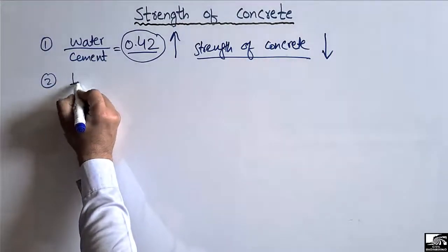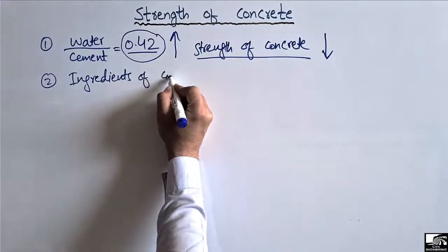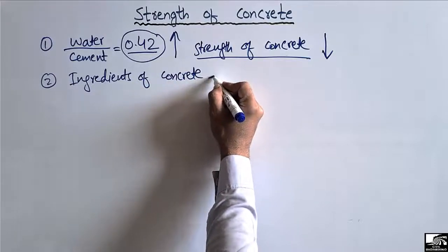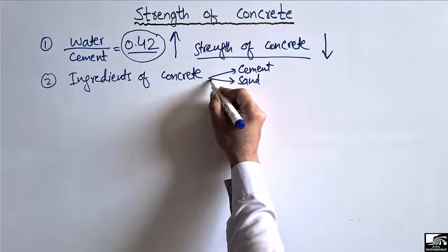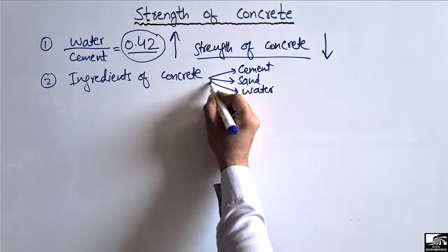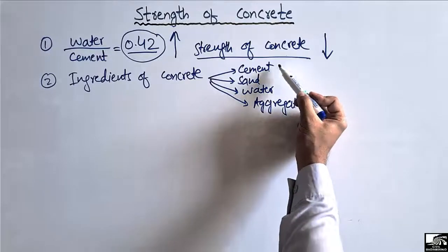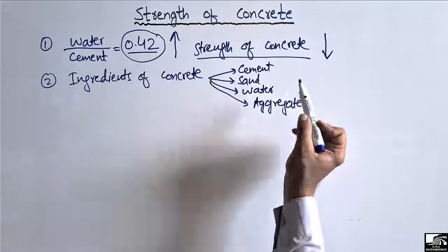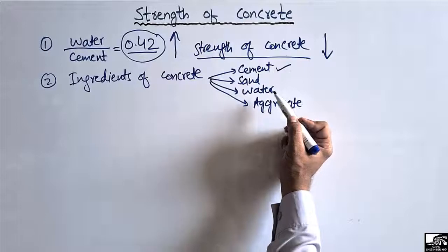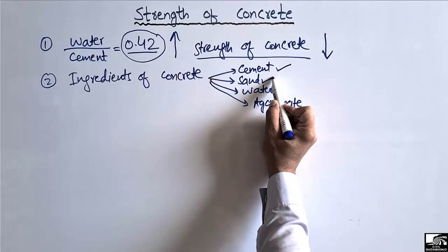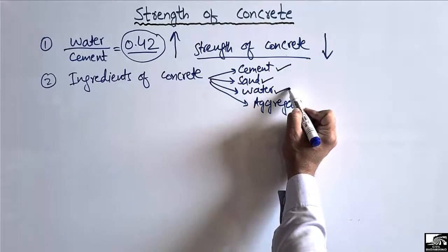The second factor that affects the strength of concrete is the ingredients of concrete. The four main ingredients of concrete are cement, sand, water, and aggregate. The quality of all these ingredients affects the strength of concrete. We should use high fineness of cement and high fineness of sand in order to achieve higher strength of concrete.